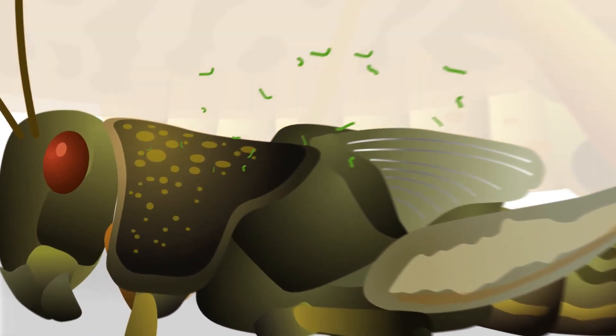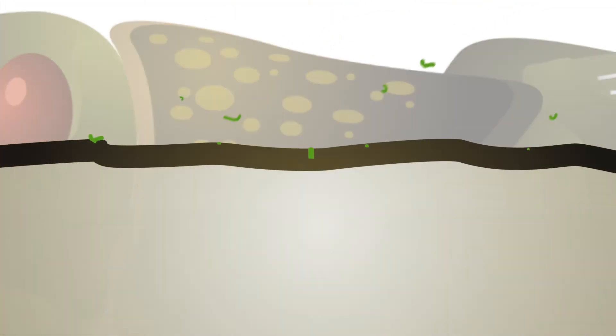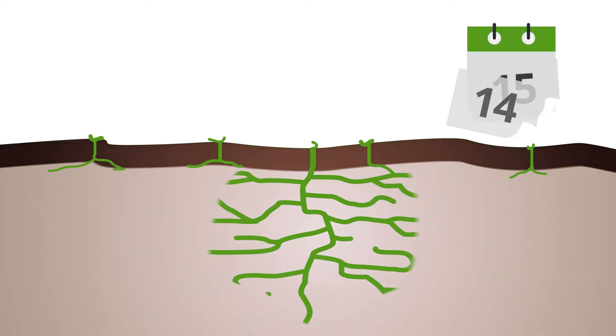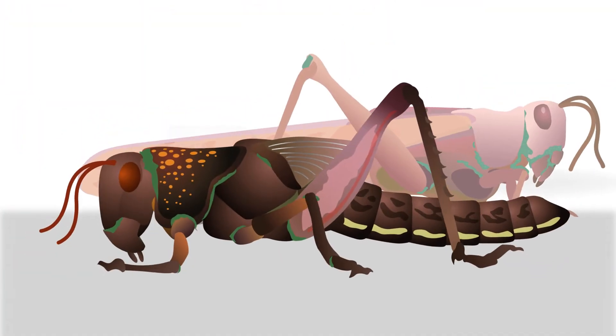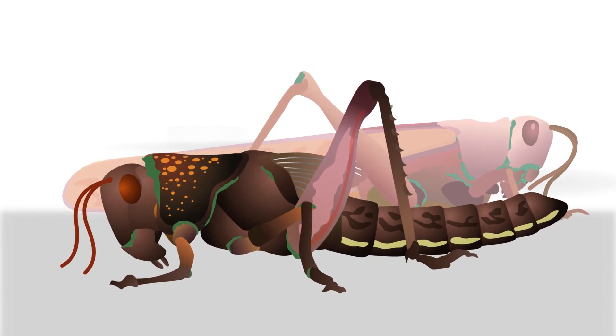When the spores come into contact with a locust, the fungus penetrates it and grows inside. By day four, the locust slows down and stops eating, and within six to ten days it dies.